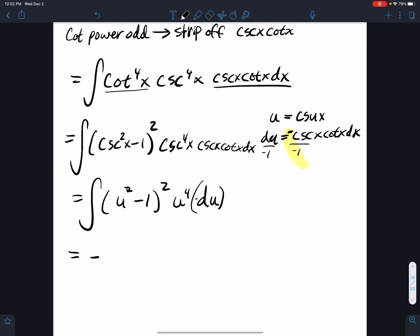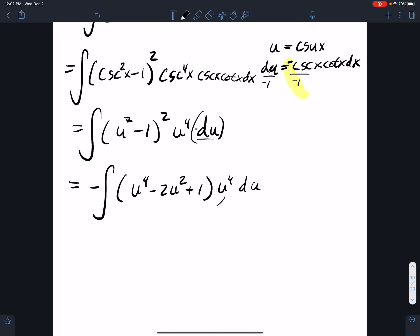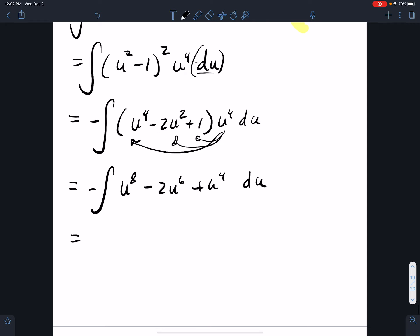Well the negative is going to come out from that du. This is going to be u to the fourth minus two u squared plus one, and then u to the fourth du. Distribute the u to the fourth and I get u to the eighth minus two u to the sixth plus u to the fourth du. Integrate,